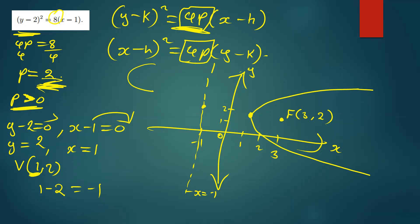Cecilia asks: when the parabola faces one direction we add p to find the focus, and when it faces the other direction we subtract — is that right? Yes, exactly. When you're going towards the positive direction you're adding to the coordinate, and when you're going back towards the negative side you're subtracting from the coordinate to find the focus. That's the logic behind it.